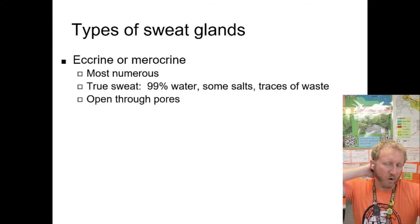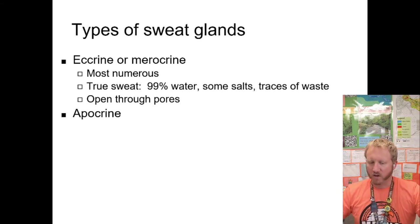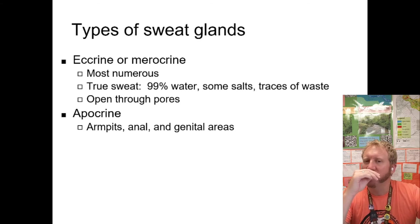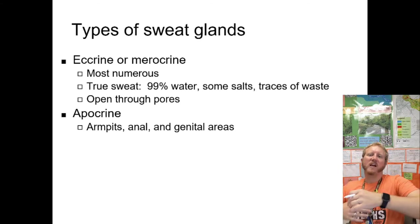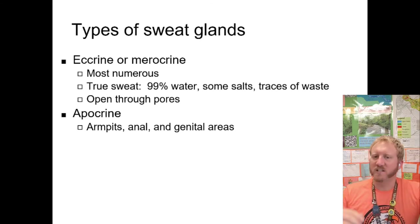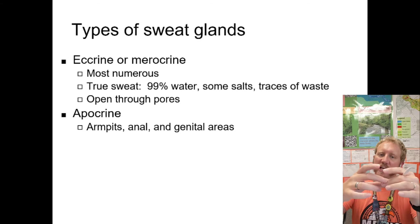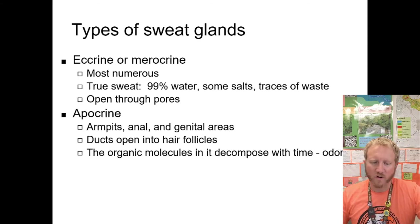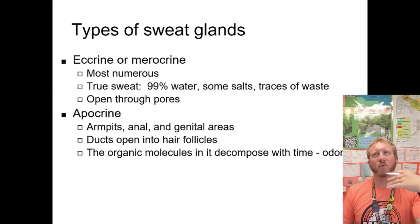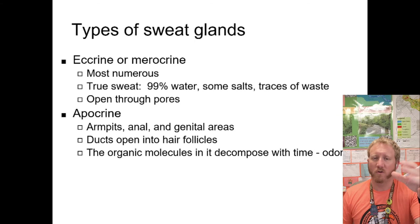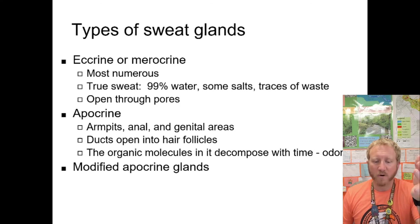You also sweat in response to stress — before a job interview or presentation. There are different types of sweat glands: eccrine or merocrine glands are the most numerous, producing true sweat — mostly water with some salts and trace waste — opening through pores. Apocrine sweat glands are found in the armpits, genitals, and anal areas. Their ducts open onto hair follicles, and they contain organic molecules that are the source of body odor, which becomes noticeable around middle school.